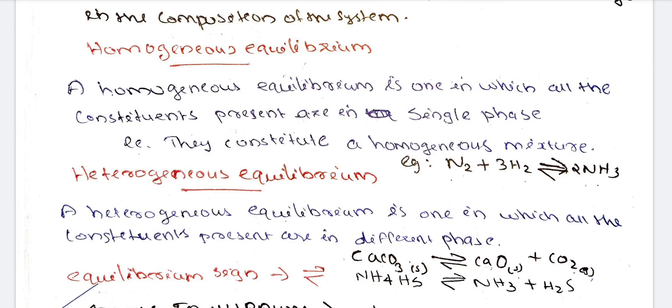If you have an example, what is that? N2 plus 3H2 gives 2NH3. Ammonia preparation. If nitrogen is a gas, hydrogen is a gas, ammonia is a gas. It is a single phase. If we have a homogeneous equilibrium.